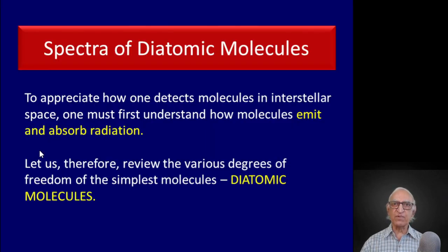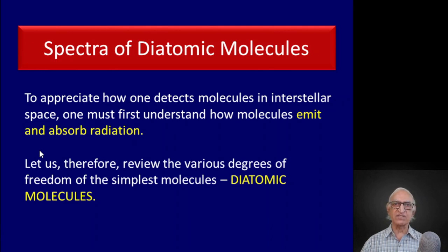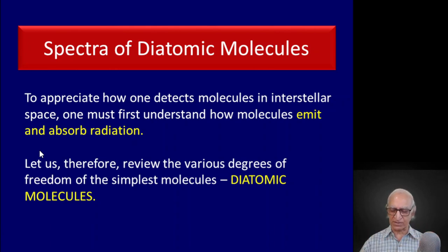To appreciate how one detects molecules in interstellar space, one has to first understand how molecules emit and absorb radiation. Let us therefore review what quantum mechanics has to say about this, and let us first start with the various degrees of freedom of the simplest of molecules, namely a diatomic molecule consisting of two atoms.